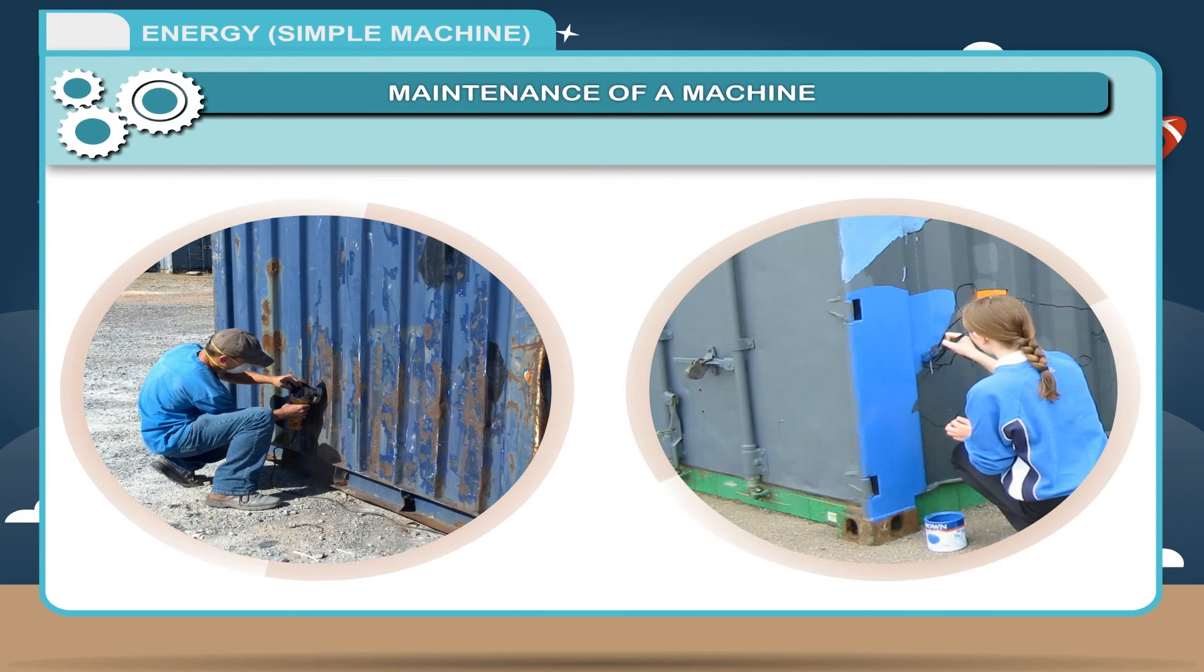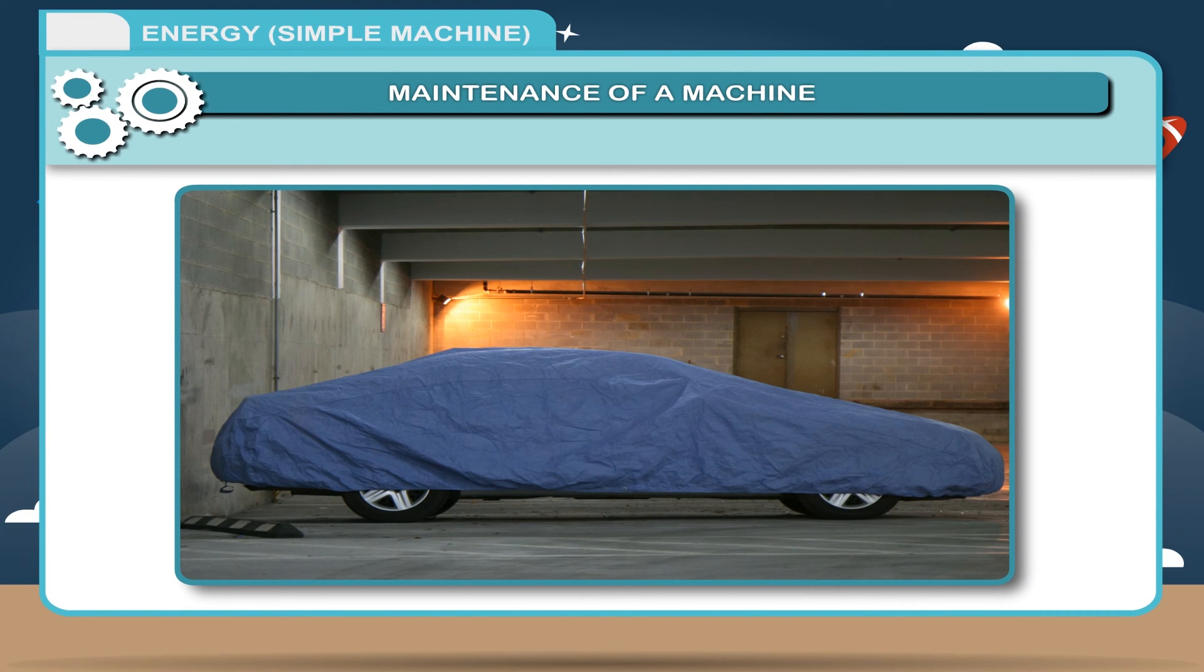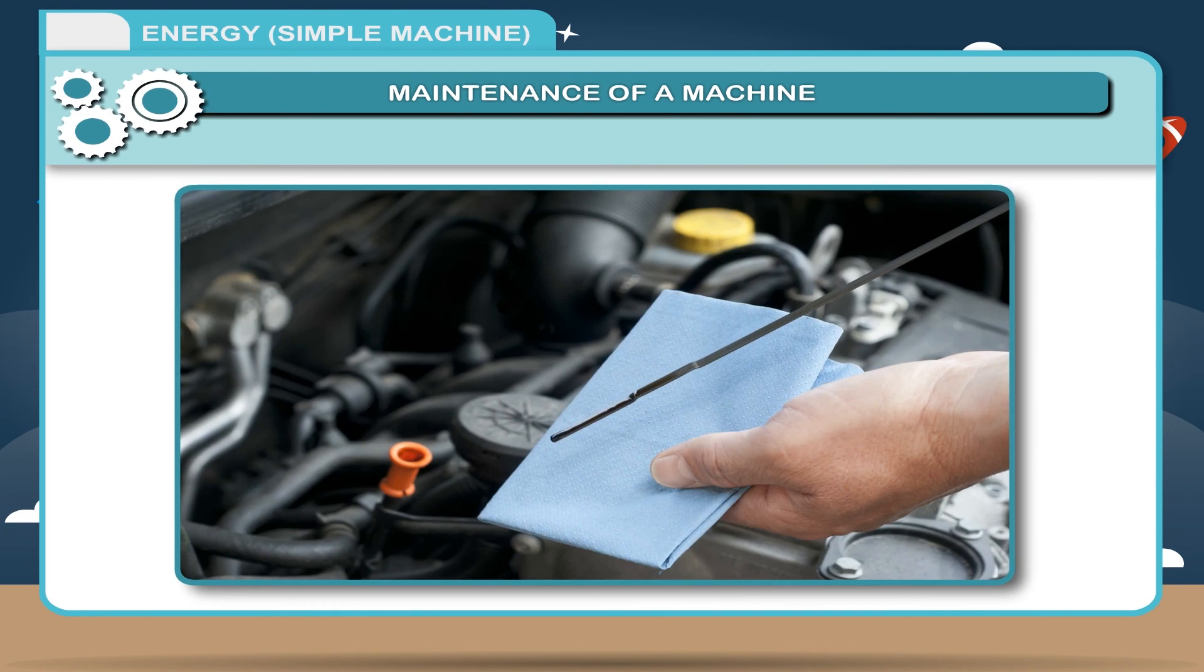2. To avoid rusting, the parts of the machine should be painted. 3. To protect it from dust and moisture, the machine should be properly covered when it is not used. 4. A machine should be regularly cleaned and checked up for any deficiency.